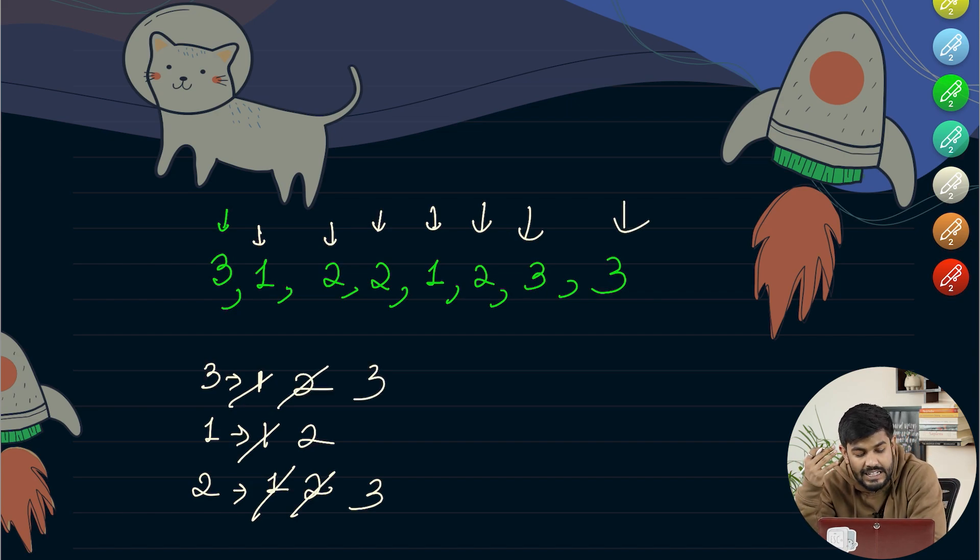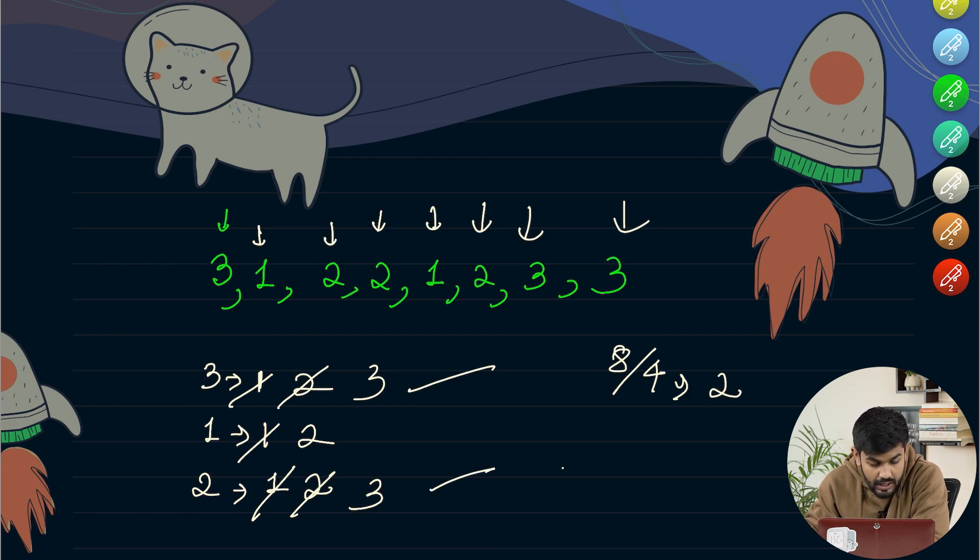Now what is n divided by k? So n is 8 and k is 4 so it is 2. So the number of elements whose occurrence is more than 2, that is 3 and 2. That is why the output is 2 itself.